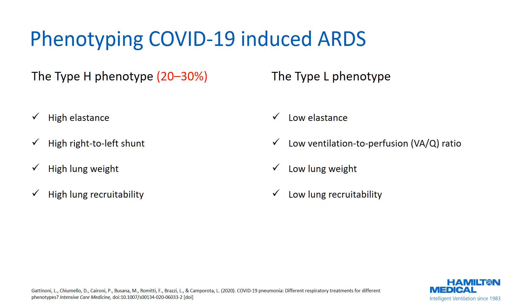Gattinoni and his colleagues suggest classifying patients into two distinct phenotypes: Type H and Type L. Patients presenting with Type H may have high elastance, explainable by a reduction in gas volume and an increased proportion of edematous lung tissue; a high right-to-left shunt, due to the proportion of cardiac output perfusing non-aerated lung tissue; high lung weight from greater edematous lung; and high lung recruitability, since a higher proportion of collapsed alveoli logically increases the potential for recruitment.